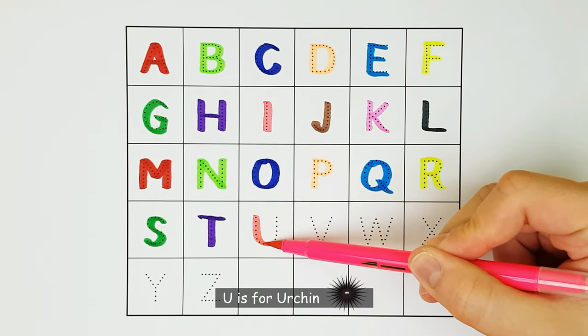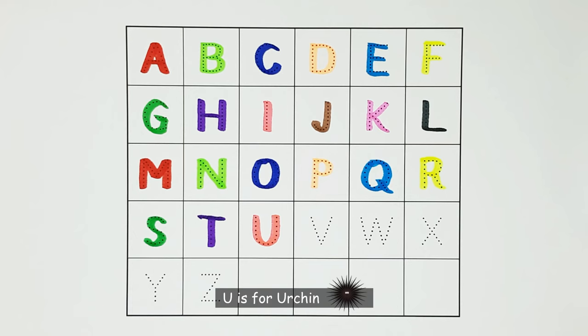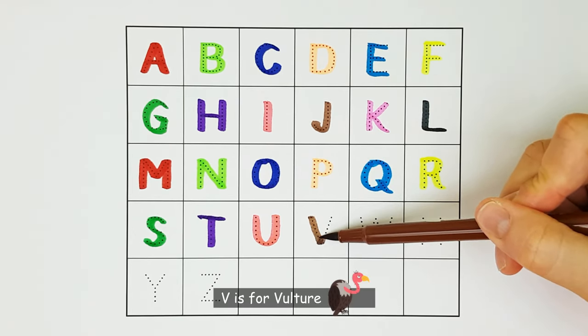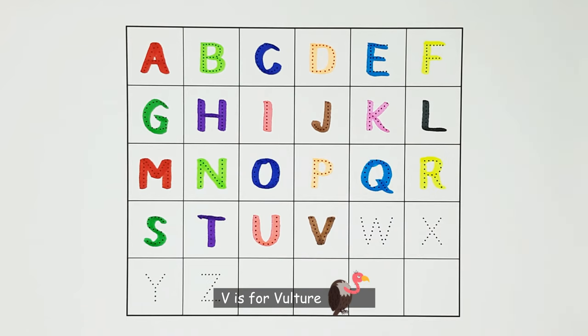U. U is for Urchin. U. V. V is for Vulture. V.